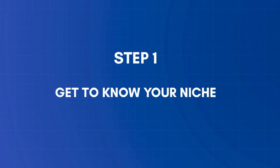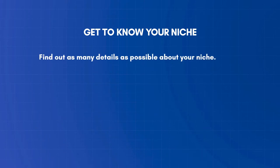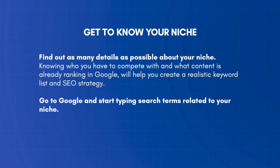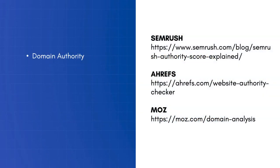Step 1: Get to know your niche. The first step is to find out as many details as possible about your niche. Knowing who you have to compete with and what content is already ranking in Google will help you create a realistic keyword list and SEO strategy. Go to Google and start typing general terms related to your niche. Visit all websites that come up on the first page of Google, and take note of things like the domain authority. The domain authority is a score between 0 to 100 that tries to predict how well a website will rank on search engines.